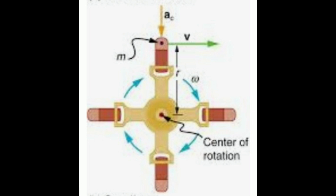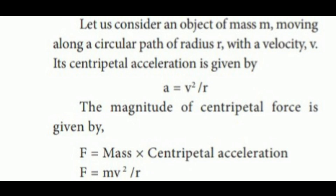Consider an object of mass m moving along a circular path of radius r with velocity v. Its centripetal acceleration is given by a = v²/r. The magnitude of centripetal force is given by F = m × centripetal acceleration, so F = mv²/r.